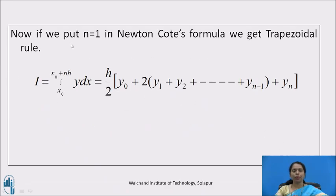Now, if we put n equals 1 in Newton-Cotes formula, we get the required trapezoidal rule for numerical integration. The rule will be integration x naught to x naught plus nh y dx is equal to h by 2 times bracket y naught plus 2 times bracket y1 plus y2 plus and so on plus y_(n-1) plus y_n.